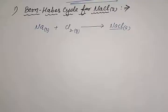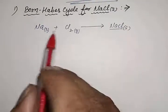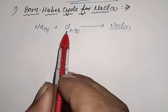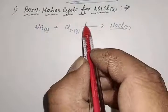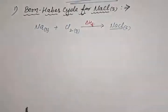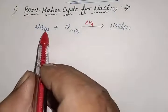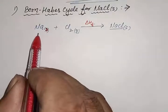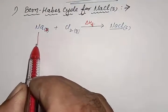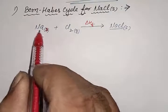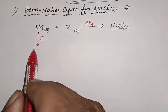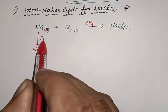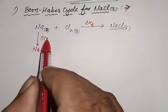We know that when one mole of a solid is formed from its constituent particles, and these constituent particles are other than gaseous ions, the amount of energy released is called enthalpy of formation. First of all, we have to convert the sodium solid into gaseous state. The amount of energy that converts the sodium solid directly into its gaseous atom is called enthalpy of sublimation, and this value is always positive.